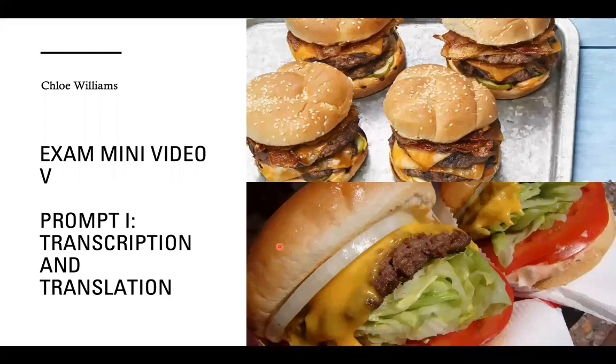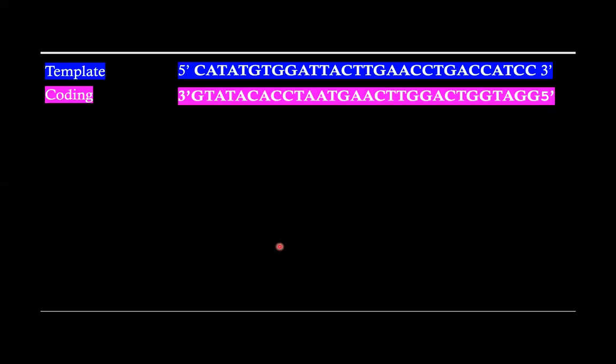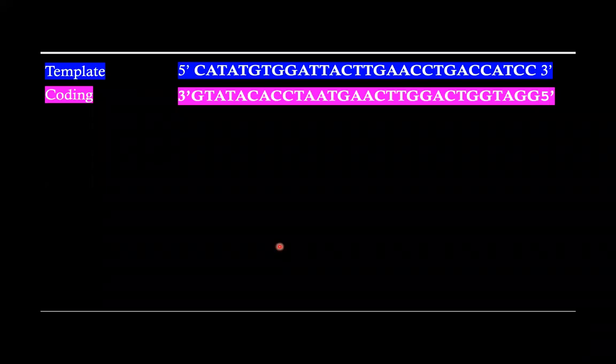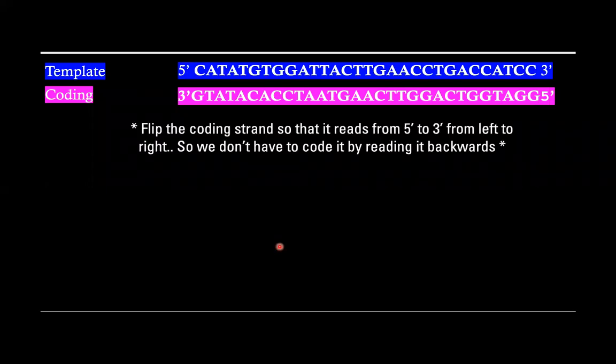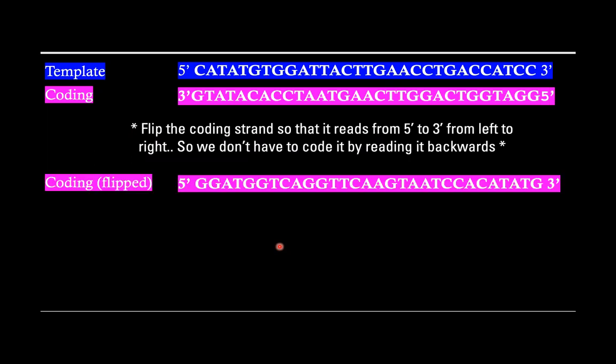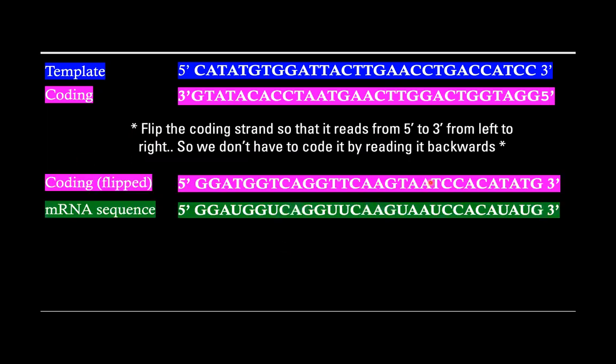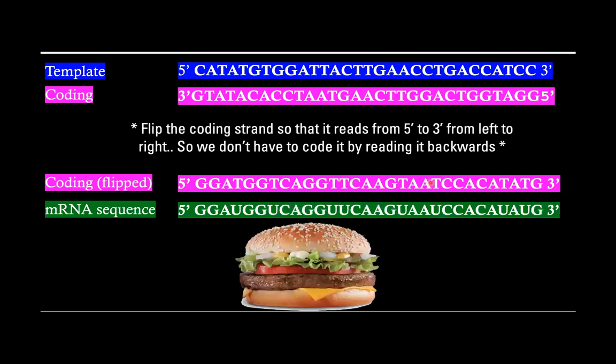Today we're going to be talking about transcription and translation. Here's the DNA sequence we're going to be transcribing and translating. First we're going to flip our coding strand around so that it reads 5 prime to 3 prime from left to right, so that we don't have to read it backwards. Here it is flipped around, and then here's our mRNA sequence.